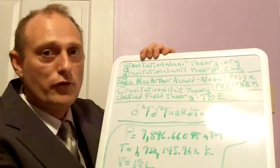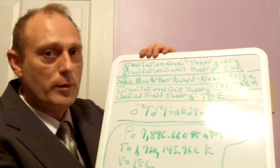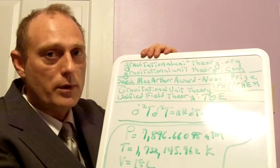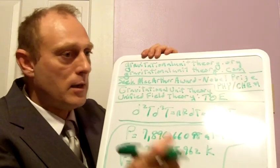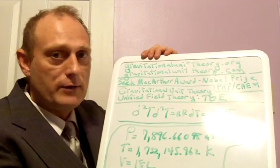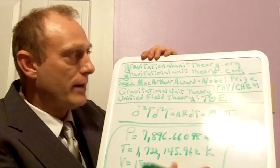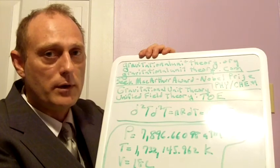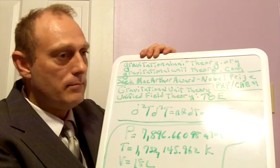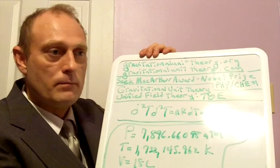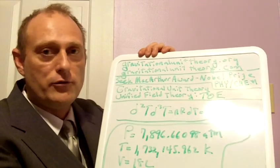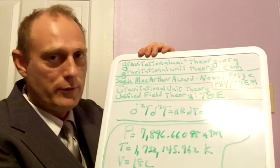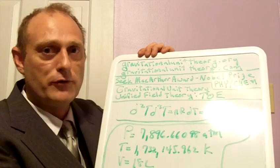My personal goal is to win the MacArthur Award. My contact information is at GravitationalUnitTheory.org. My name's Todd Gooch, and thank you very much for your time.